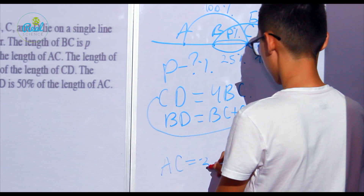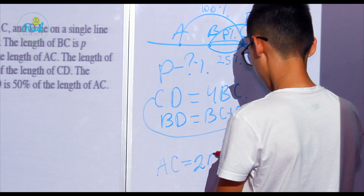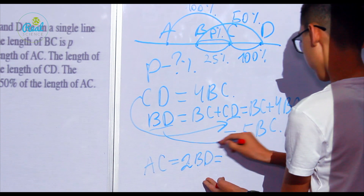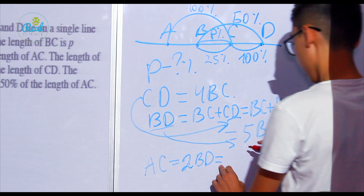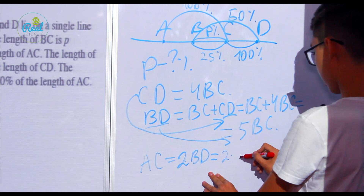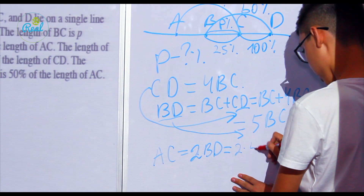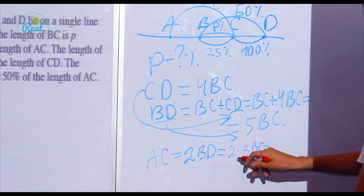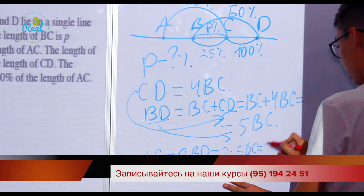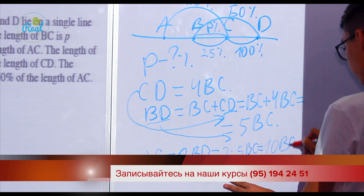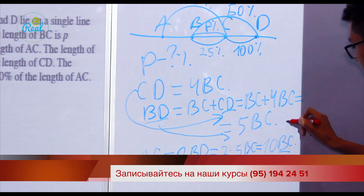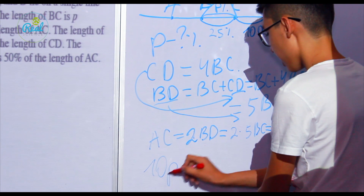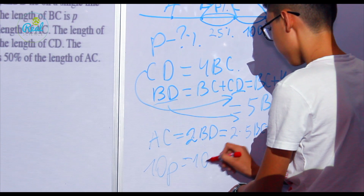AC equals 2·BD. We just found BD equals 5·BC, so multiplying by 2 gives AC equals 10·BC. We know that BC is P percent, so we substitute and get 10·P equals 100 percent.